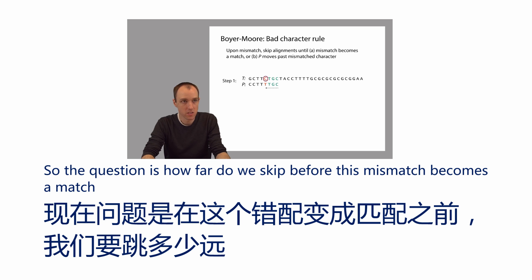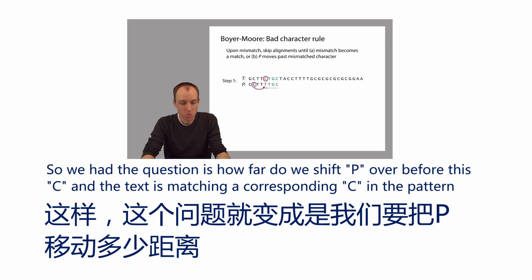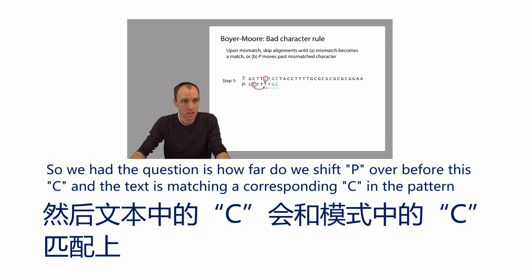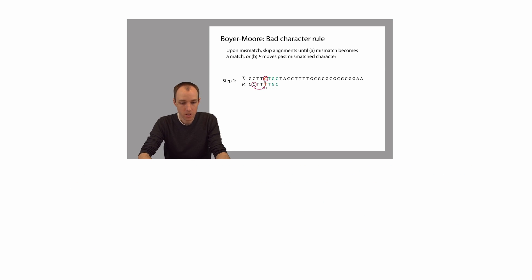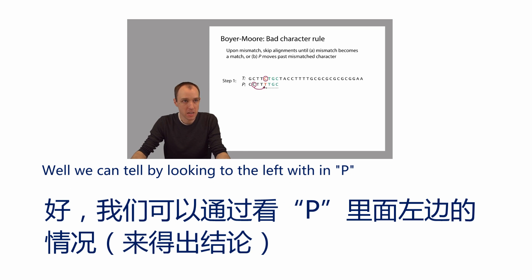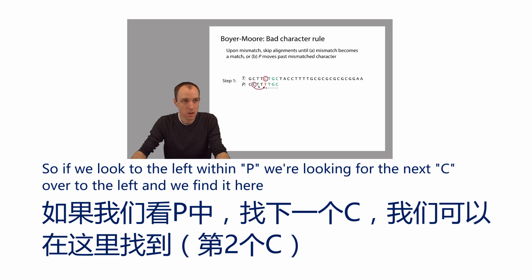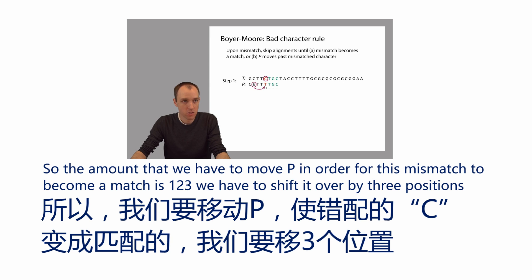The question is how far do we skip before this mismatch becomes a match — how far do we shift P over before this C in the text is matching a corresponding C in the pattern? We can tell by looking to the left within P. Looking to the left within P, we find the next C over to the left right here. So the amount we have to move P for this mismatch to become a match is three positions.